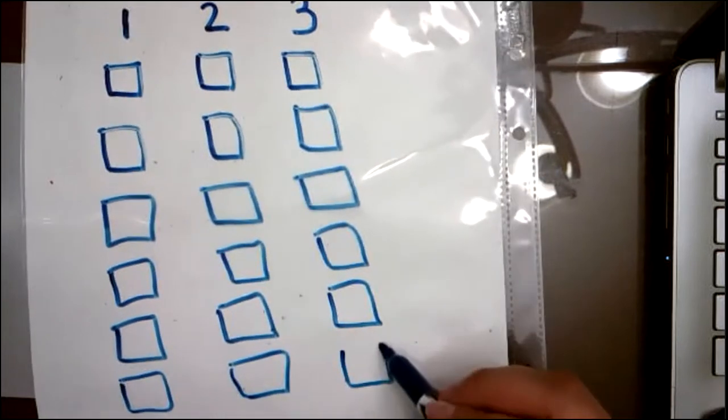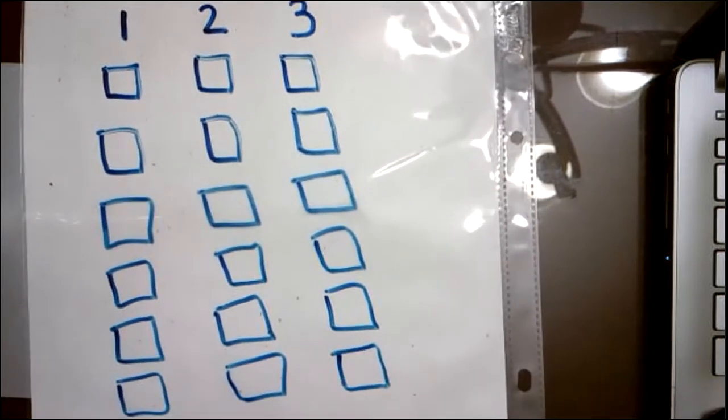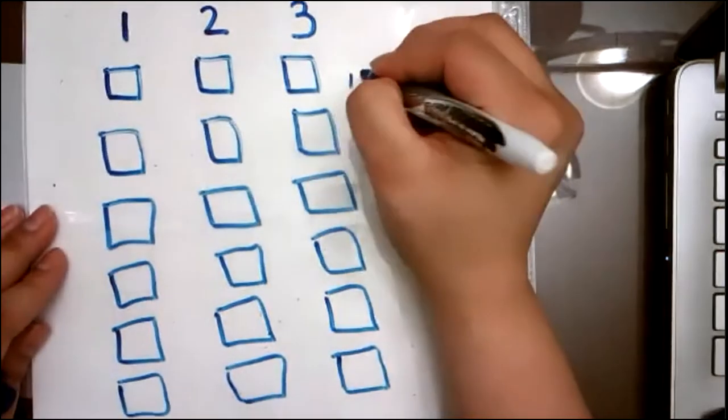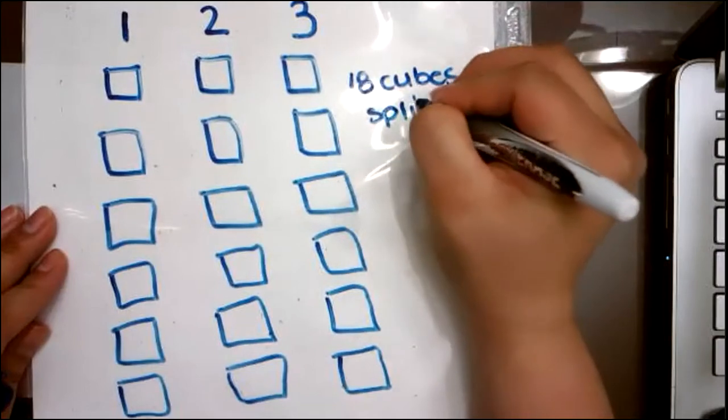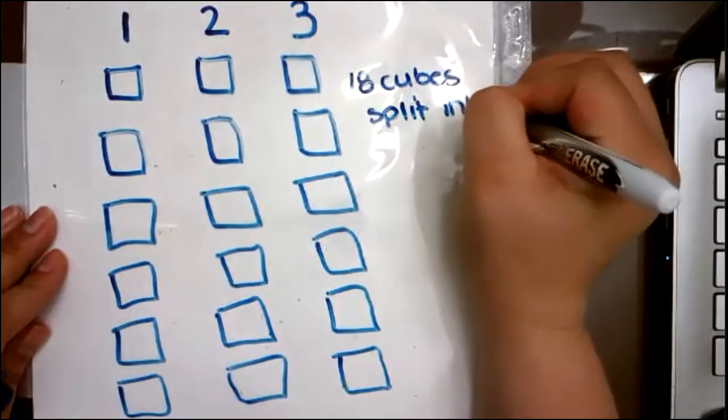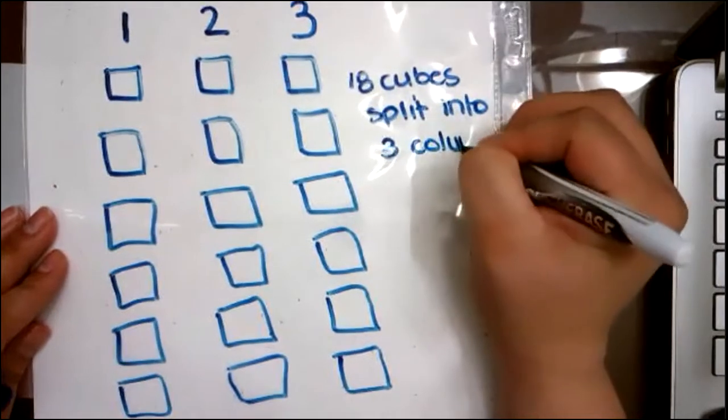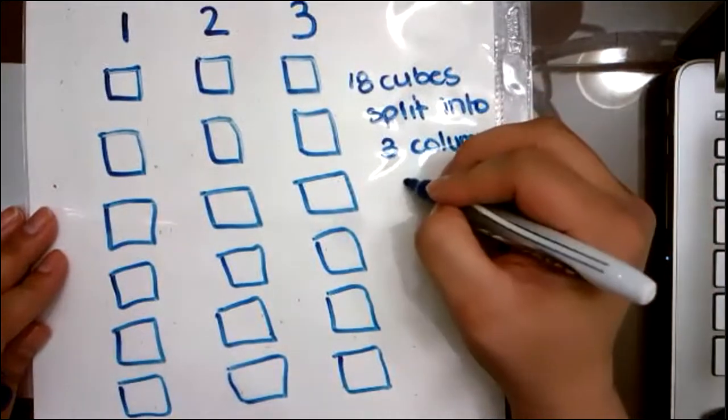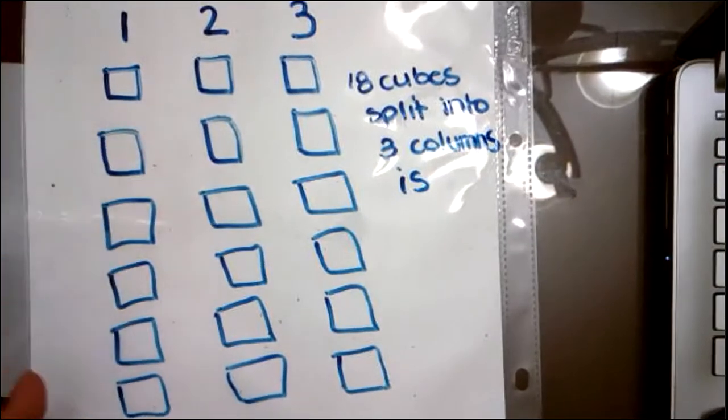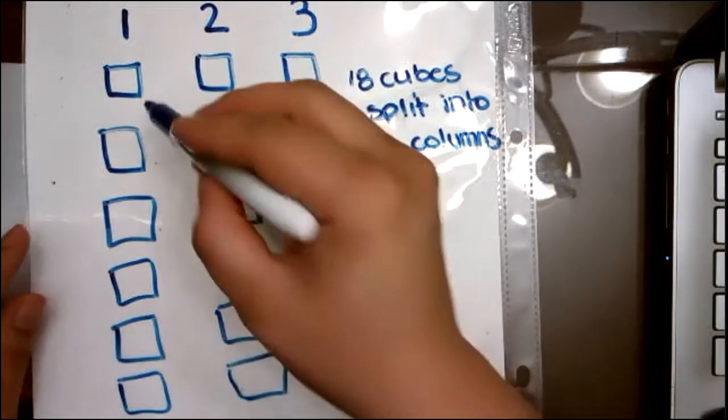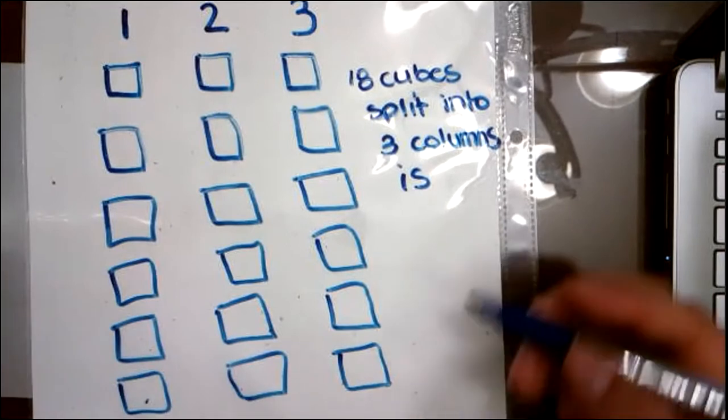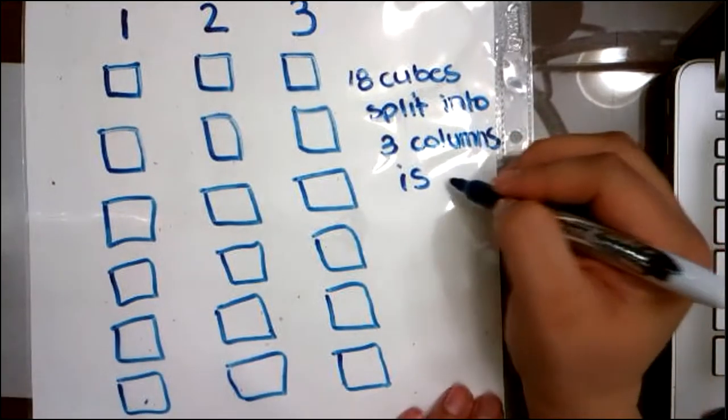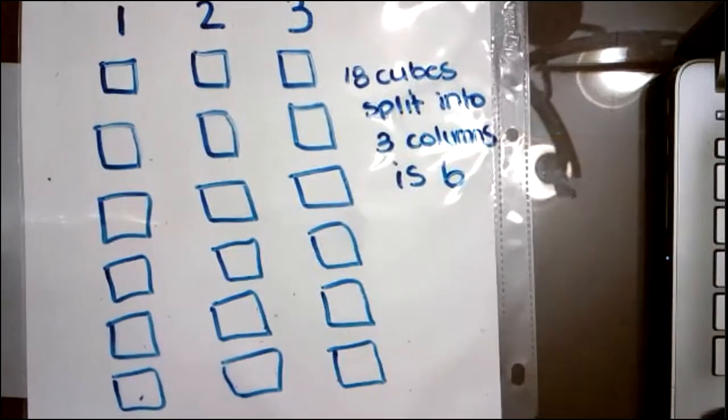So 18 cubes split into three columns is how many squares or cubes do we have in each column? All right, we have one, two, three, four, five, six in each column. So 18 cubes split into three columns is six.